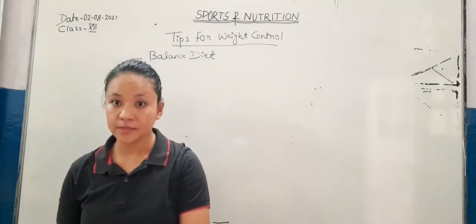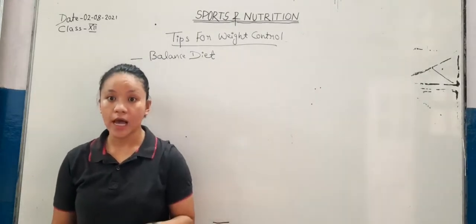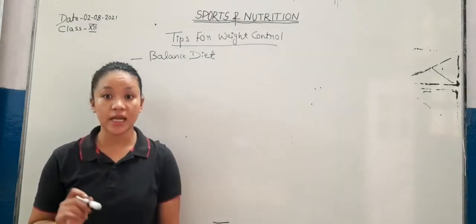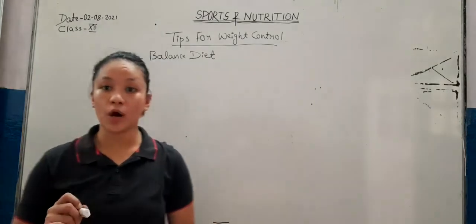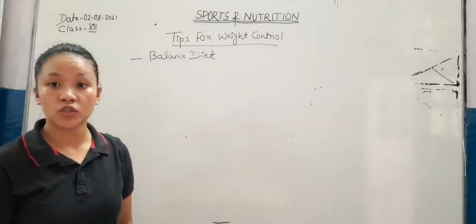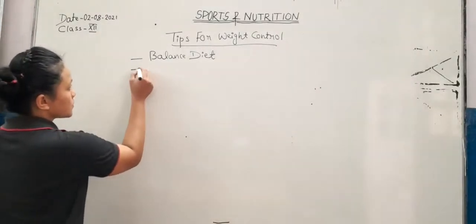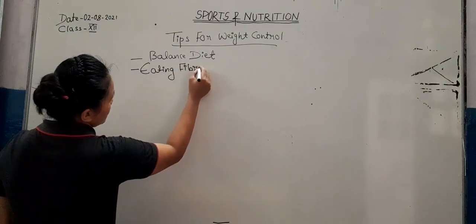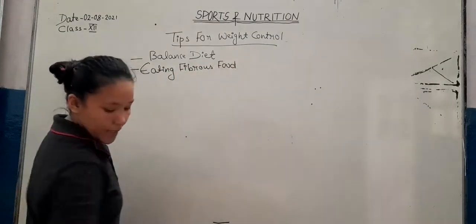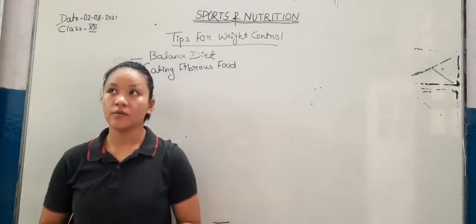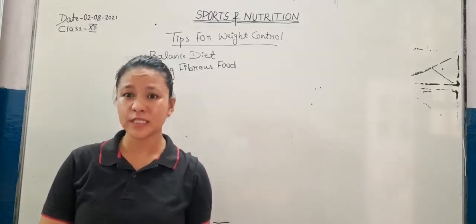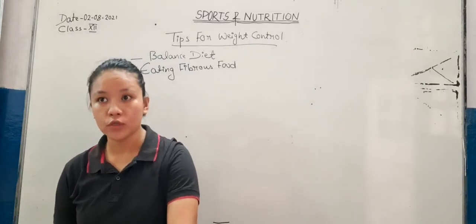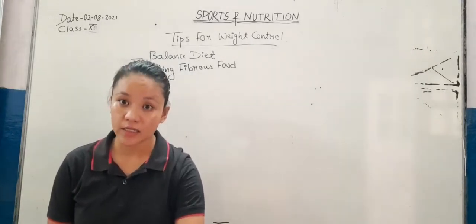Balanced diet means the diet which contains all nutrients — carbohydrates, proteins, fats, vitamins, minerals — in correct proportion. By eating a proper balanced diet we can maintain our body weight. Eating fibrous food like fruits, vegetables, green leafy vegetables, salads, etc., helps control weight because fibrous foods satisfy hunger and help in digestion.